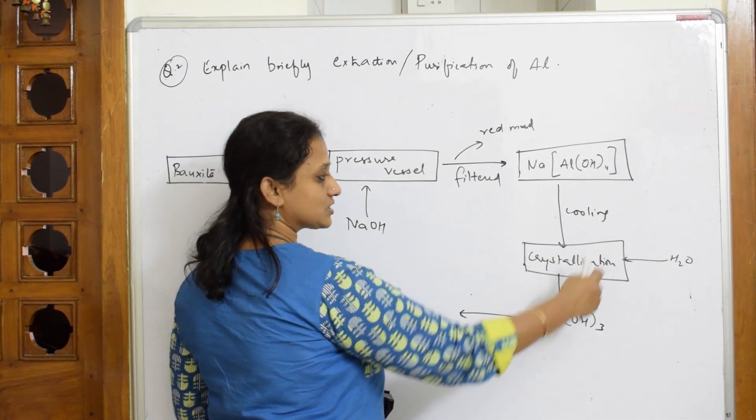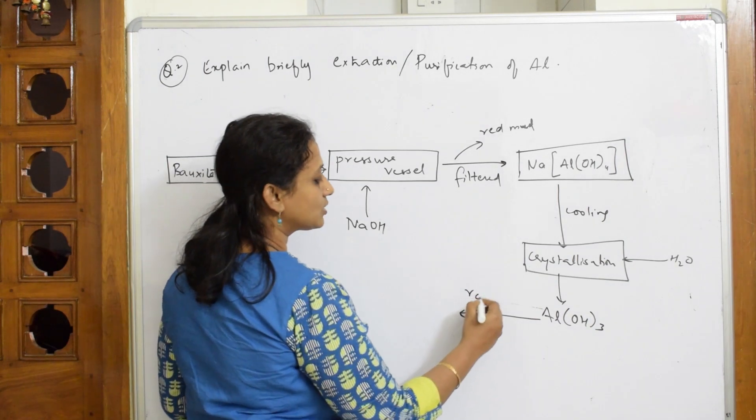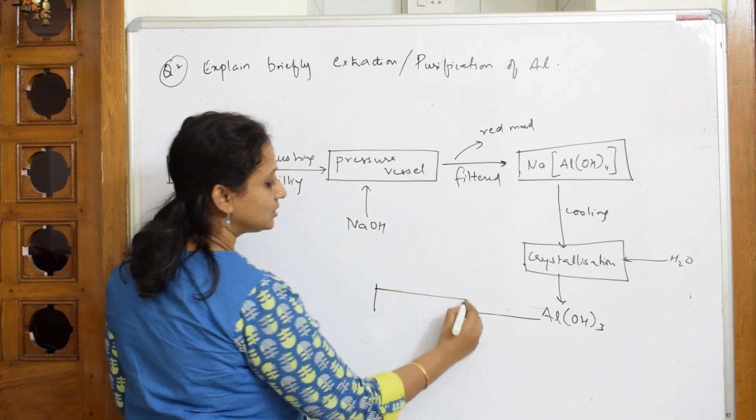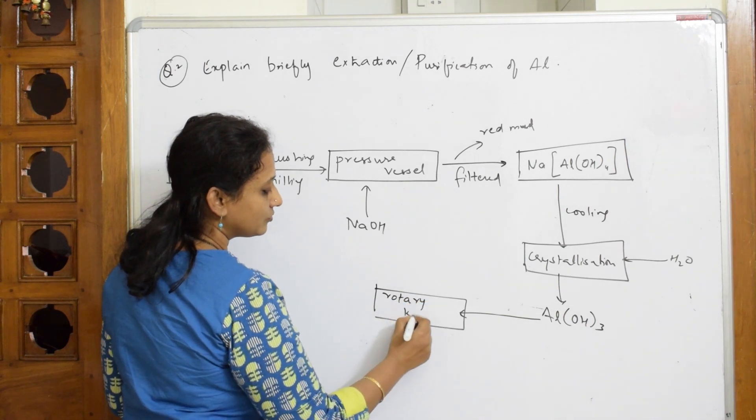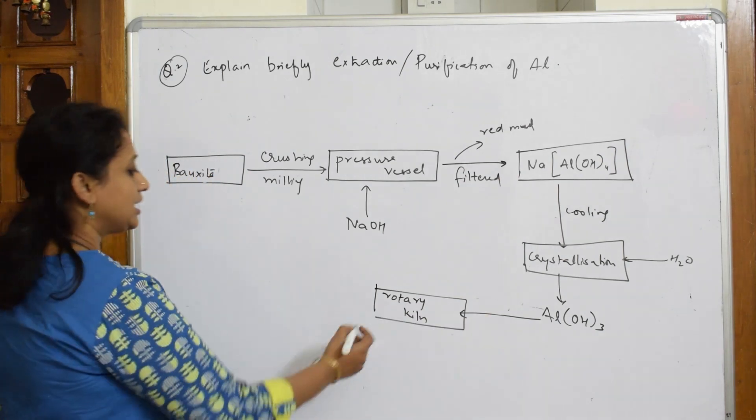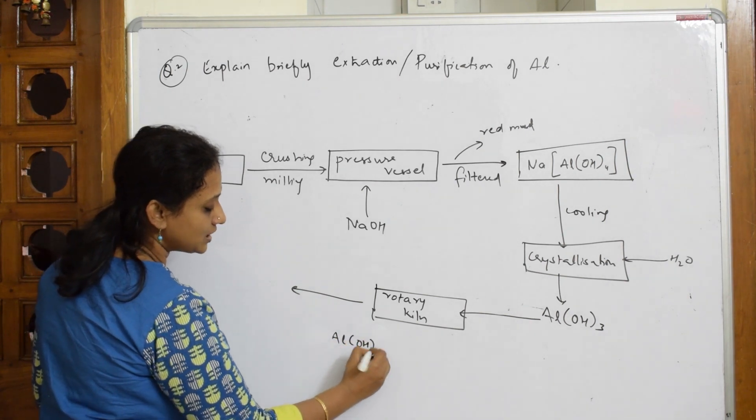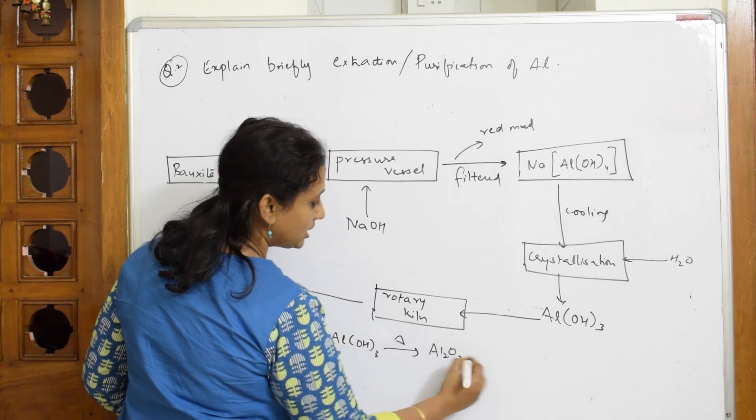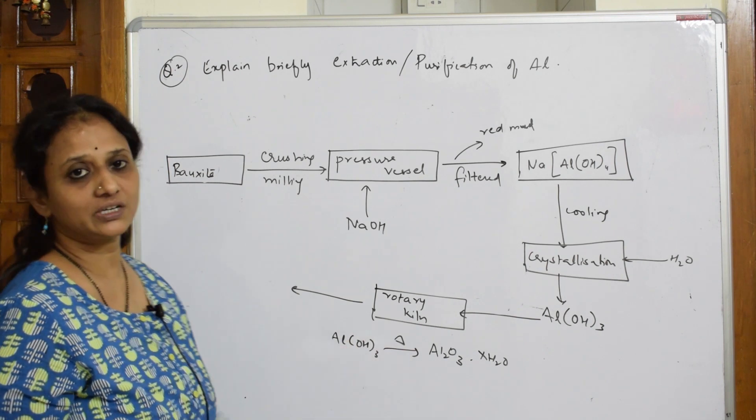After crystallization, which is infused with water, this aluminium hydroxide, we are going to send it further to a rotary kiln where you are heating it. When you are heating it, aluminium hydroxide breaks up. We very well know what is the reaction. Aluminium hydroxide when you are heating it, it will break up into Al2O3.XH2O, which is incorporated. Here you have three.